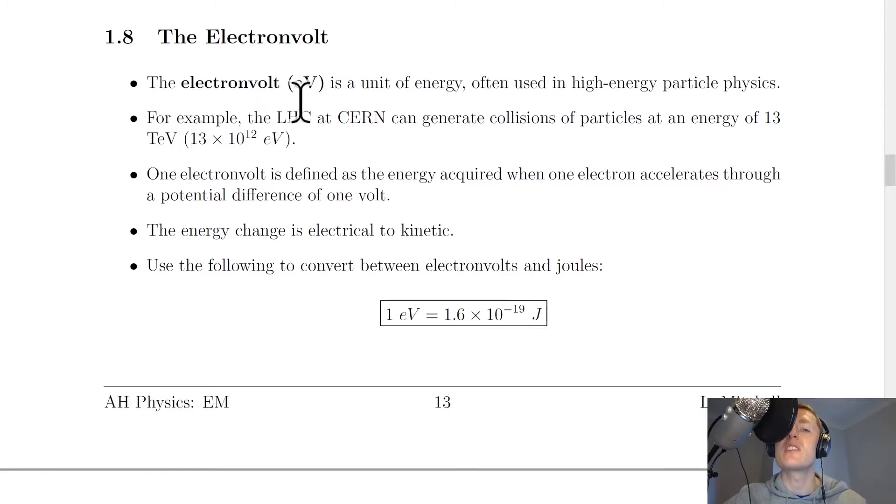Now it says here that the electron volt, which has the symbol small e, capital V, is a unit of energy often used in high energy particle physics.